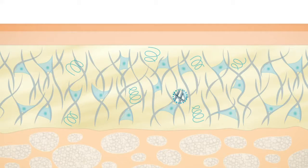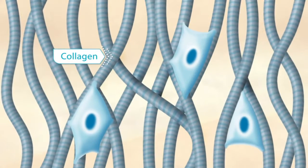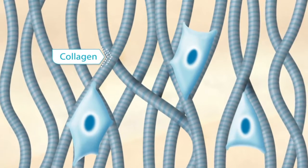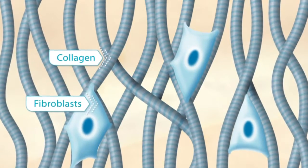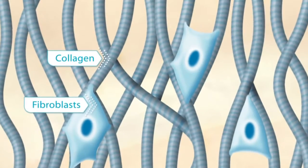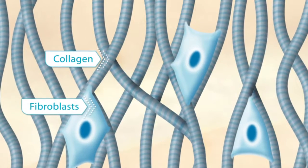Its most abundant component is collagen, a protein that ensures the structural integrity of the skin. Fibroblasts stretch out through the collagen network, and the resulting mechanical tension regulates collagen synthesis.